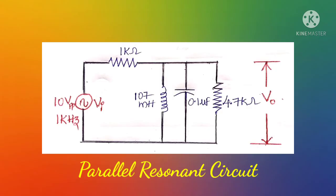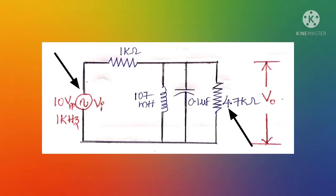Now we will understand the parallel resonant circuit. Here the inductor, capacitor, and resistor are all connected in parallel. The difference is that a series resistor of 1 kilo ohm is added to this parallel combination. The input is supplied from the function generator and the output is measured across the 4.7 kilo ohm resistor. Since all three are in parallel, we can measure voltage across any of them.